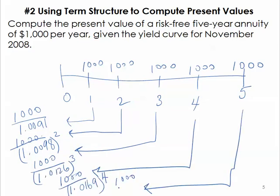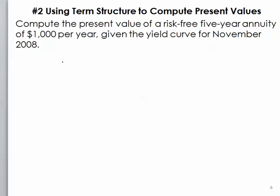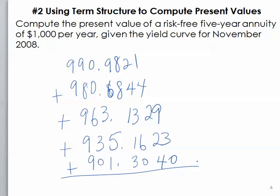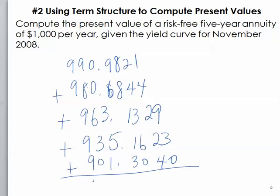Then we will add up all of these discounted cash flows, all being discounted back to time period zero. These are the cash flows we got from doing these discounts. We get four thousand seven hundred and seventy one dollars and 27 cents.